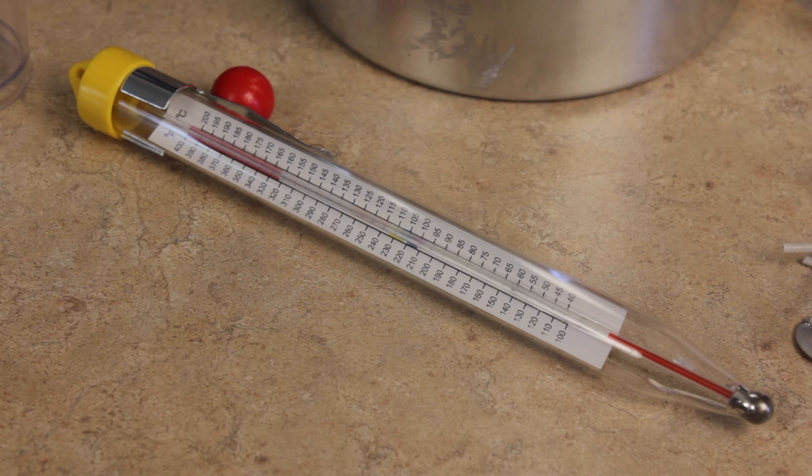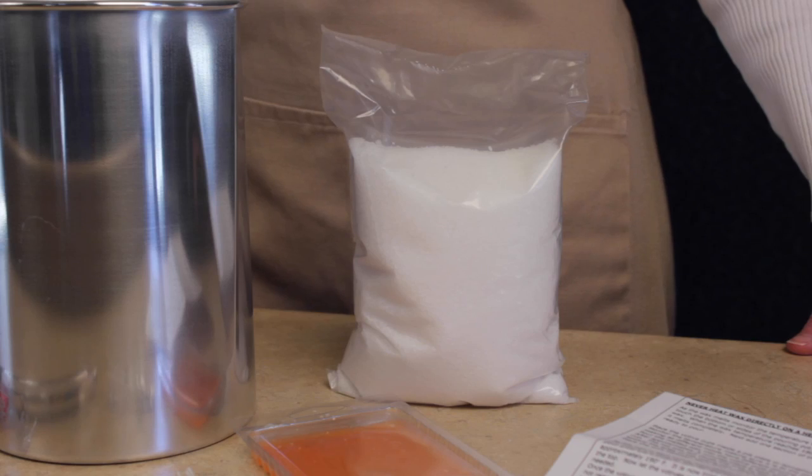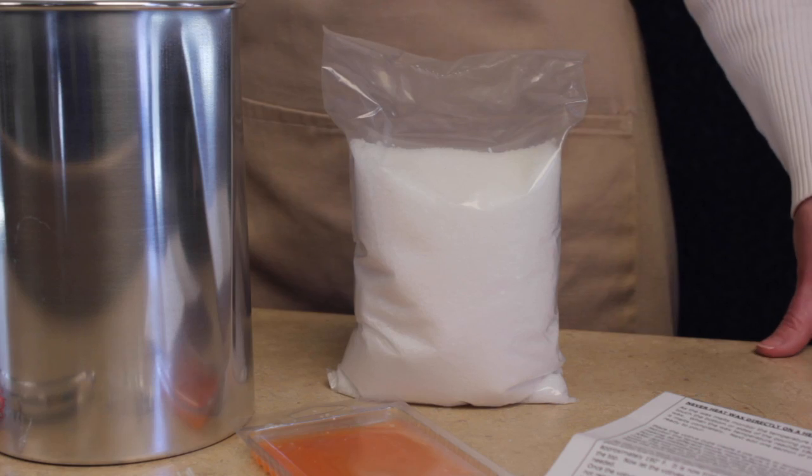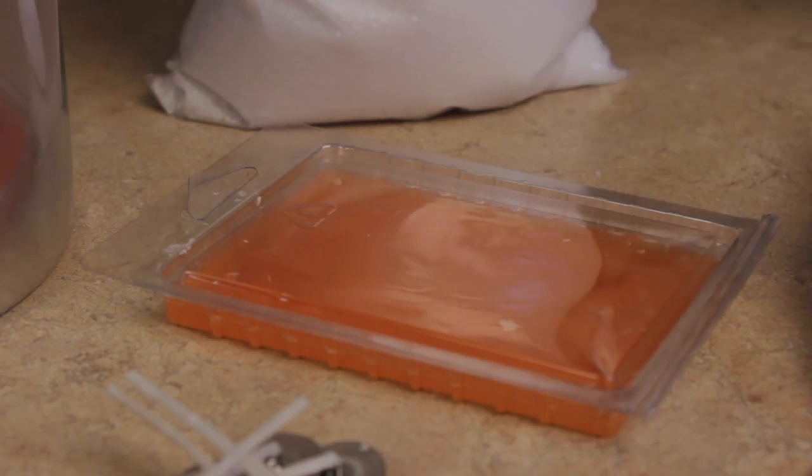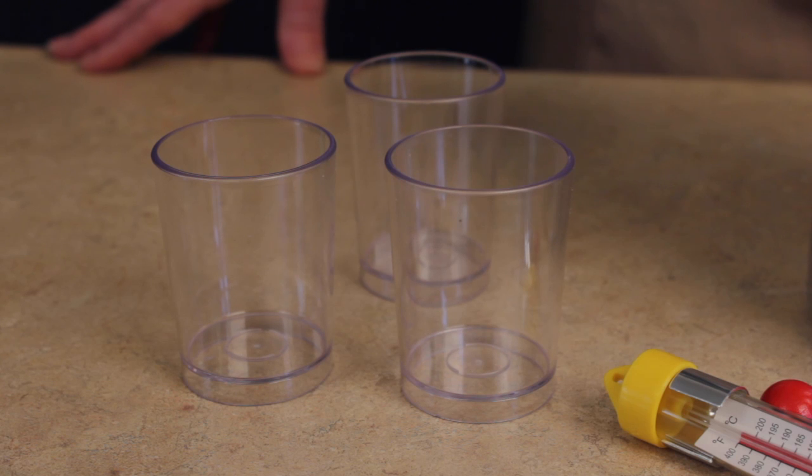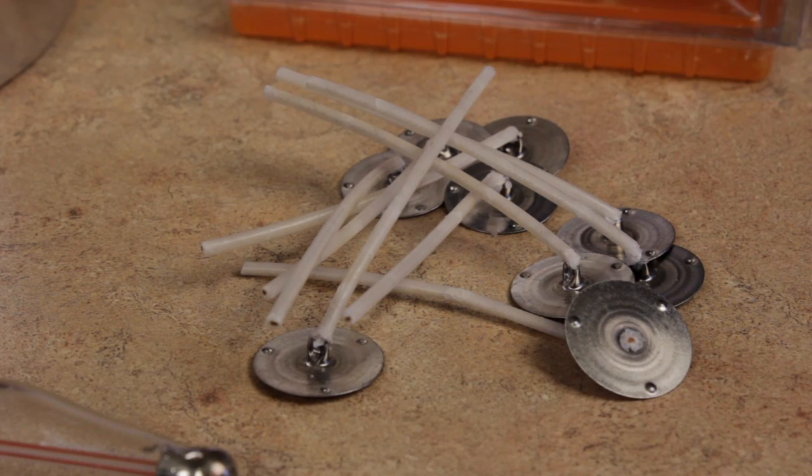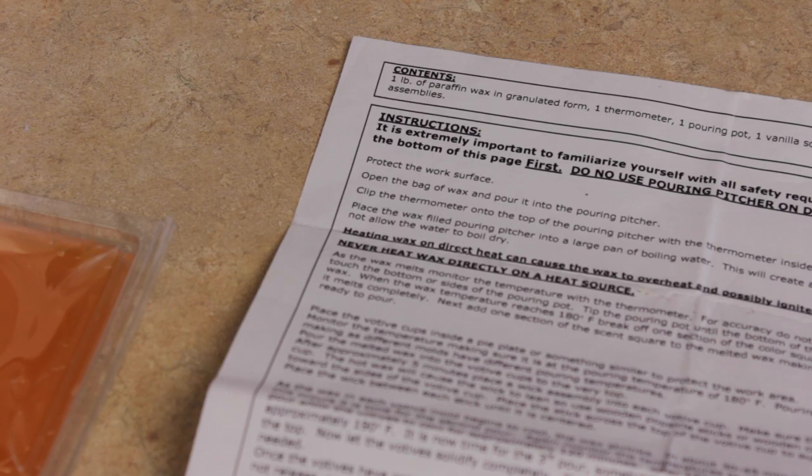one thermometer, a one-pound bag of granulated white paraffin wax, one sheet to produce vanilla scent and ivory color, three clear plastic votive cups, nine wick assemblies, as well as written instructions.